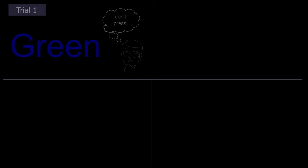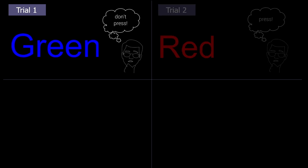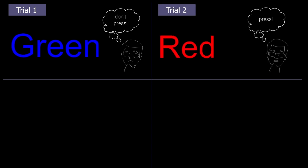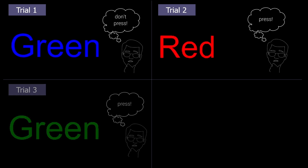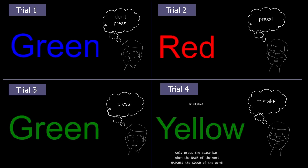Let's recap the demo. The example starts with an incongruent trial — the subject correctly refrains from pressing a button. The second trial is a congruent trial and the subject correctly presses a button. The third trial is again a congruent trial and the subject responds accordingly. However, on the fourth trial, the subject makes a mistake — a button is pressed even though the word yellow does not match the ink color, green.